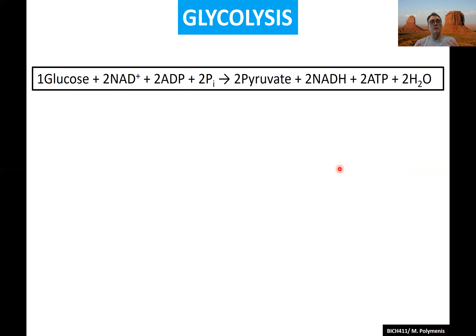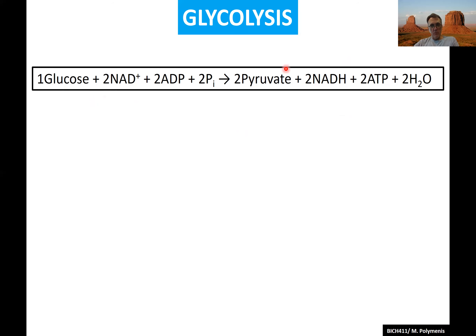You start with one glucose, which has six carbons, and break it down to two pyruvates — pyruvate has three carbons, so two times three equals six. This shows again how you start with something big and end up with something smaller — that's catabolism. Electrons come off glucose and get transferred onto NAD⁺, generating reducing power in the form of NADH. Additionally, glycolysis generates a net production of two molecules of ATP per molecule of glucose.